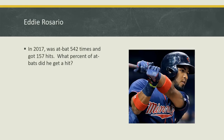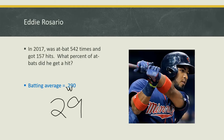You might wonder what this actually means. We can switch this to a percent. We just found that his batting average was 0.290. Remember to change from a decimal to a percent, you move the decimal to the right two places. So moving that over two means that he got a hit 29% of the time.